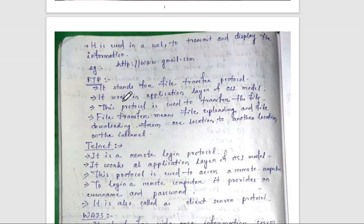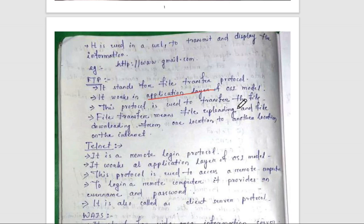FTP stands for File Transfer Protocol. It works in the application layer of the OSI model. This protocol is used to transfer files — file uploading and file downloading — from one location to another location on the internet.